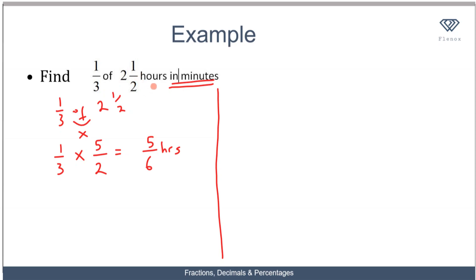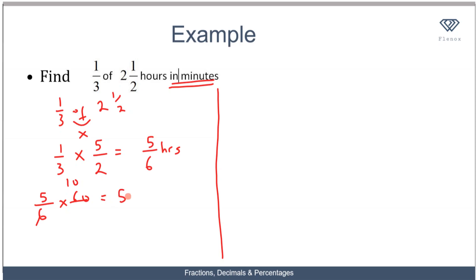So one third of two and a half hours is five over six hours. We now have to convert five over six hours to minutes by multiplying by 60, because one hour is equivalent to 60 minutes. Five over six times 60 simplifies to give you 50 minutes.